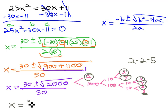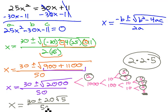So we have x equals 30 plus or minus, on the outside 2 times 2 times 5 is 20, and left inside the radical is 5, all over 50.